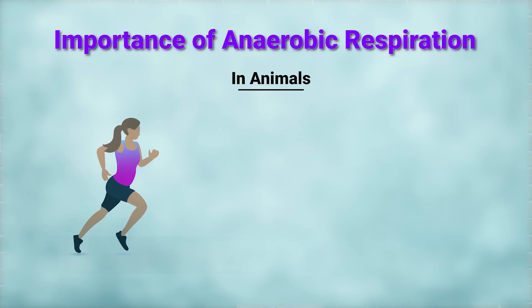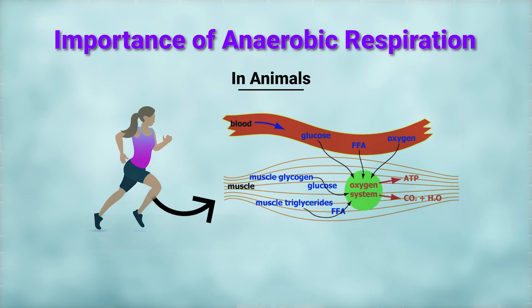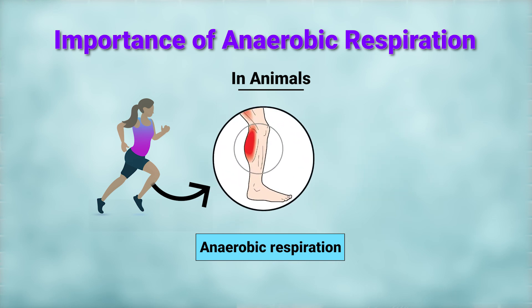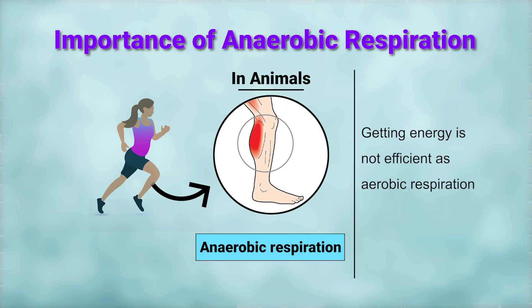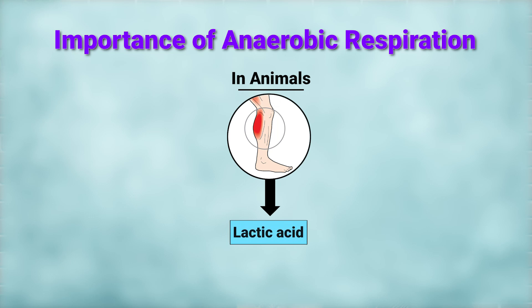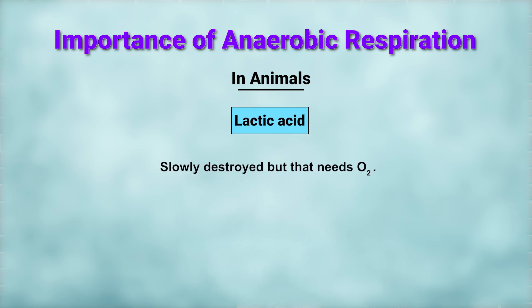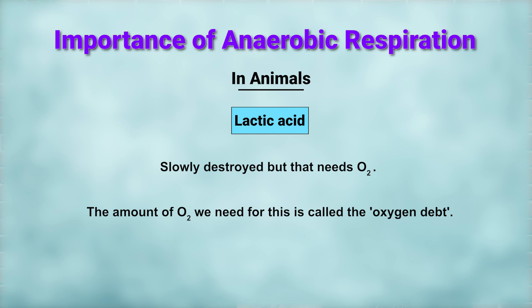In animals, when we sprint for a bus, our muscles use so much oxygen that we cannot supply it in time, so we use anaerobic respiration instead. We cannot sprint very far before things get very sore. This way of getting energy is not as efficient as aerobic respiration and leaves toxic chemicals — lactic acid — which stop our muscles working and make us sore. When we stop, the lactic acid is slowly destroyed, but that needs oxygen. The amount of oxygen we need for this is called oxygen debt.